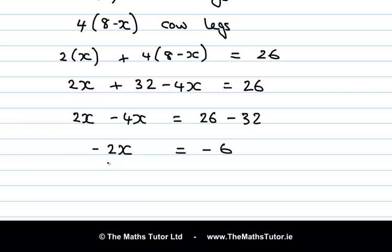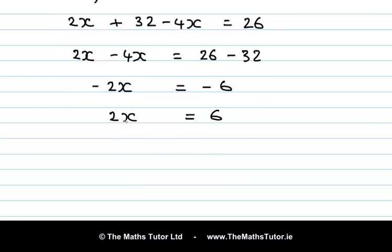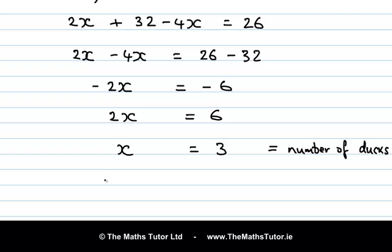Let's get rid of the minus by multiplying across by minus 1, so we get 2x equals 6. Then dividing by 2 on both sides: x equals 3. So x equals 3 is the solution. Remember x represents the number of ducks. And 8 minus x is the number of cows, so 8 minus 3 equals 5. So that is the number of cows — we have 3 ducks and 5 cows.